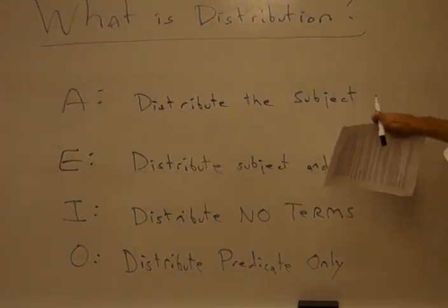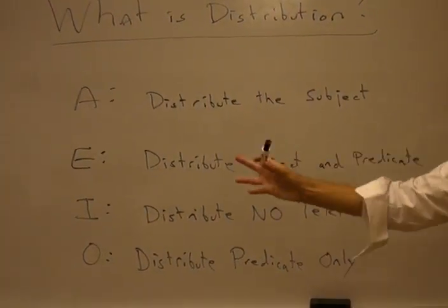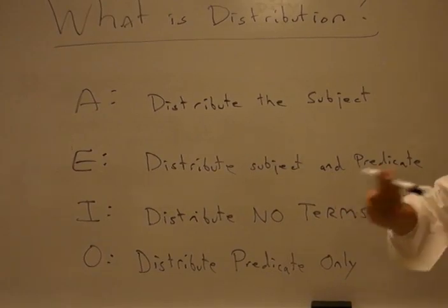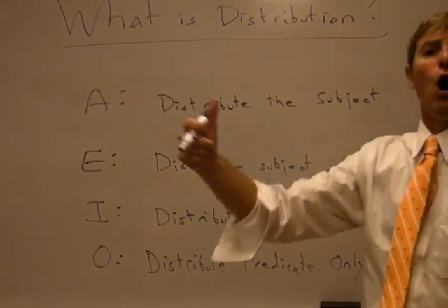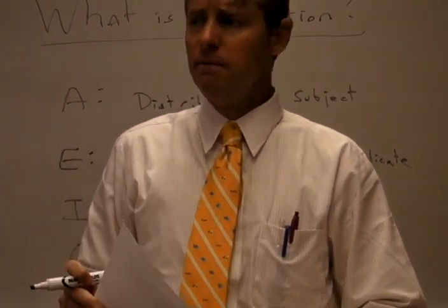A distributes subject, E distributes both, I distributes neither subject nor predicate, and O statements distribute only the predicate.